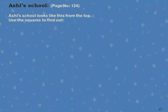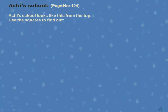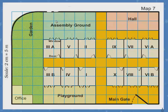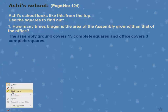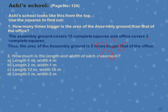Ashay School, page number 124. Ashay School looks like this from the top — use the squares to find out how many times bigger the area of the assembly ground is than that of the office. The assembly ground covers 15 complete squares (5 × 3 = 15) and the office covers 3 complete squares. So 15 ÷ 3 = 5. The area of the assembly ground is 5 times bigger than that of the office.